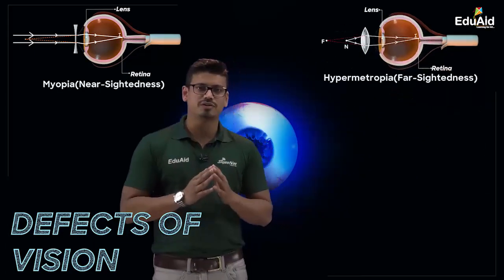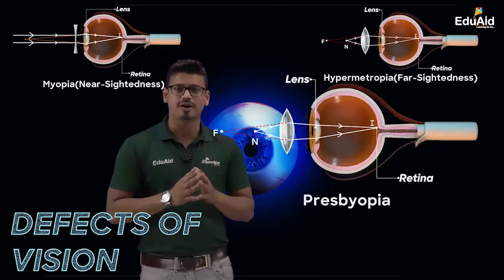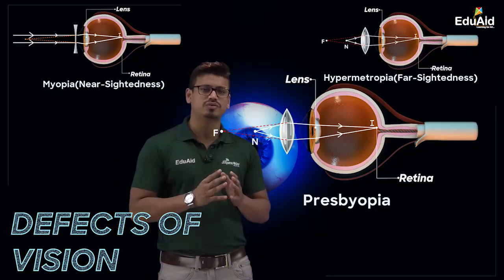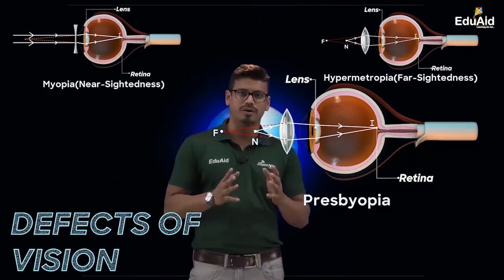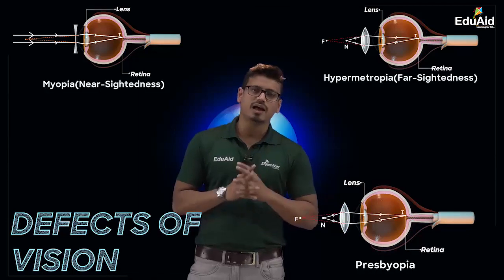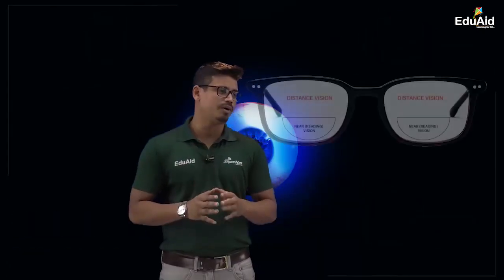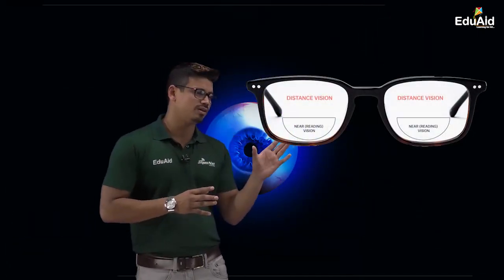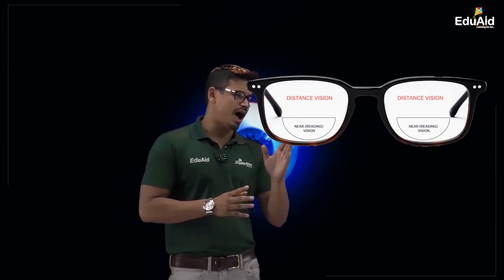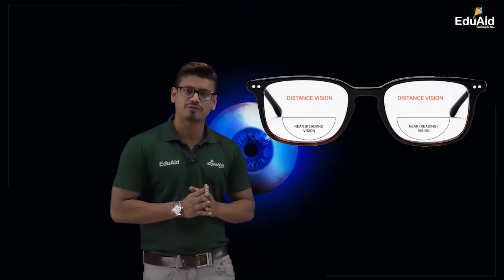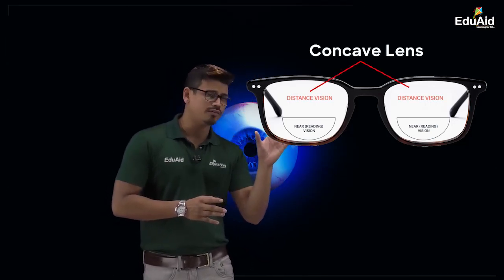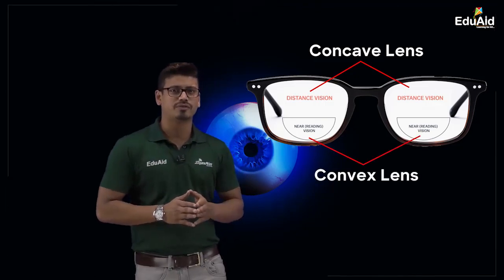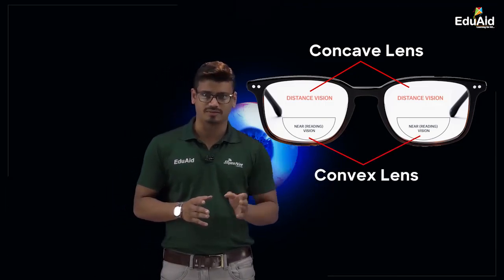The third defect of vision was presbyopia, which can also be corrected by using a convex lens of appropriate power. We then studied about the bifocal lens. In a bifocal lens, the upper part consists of a concave lens and the lower part consists of a convex lens.